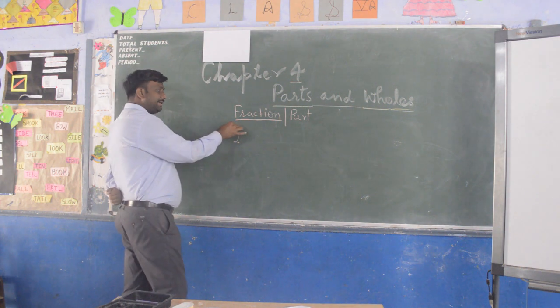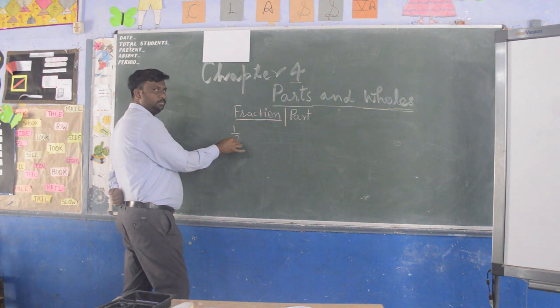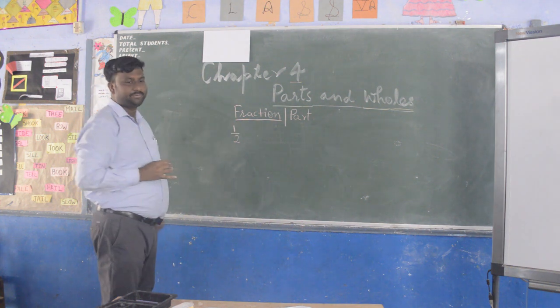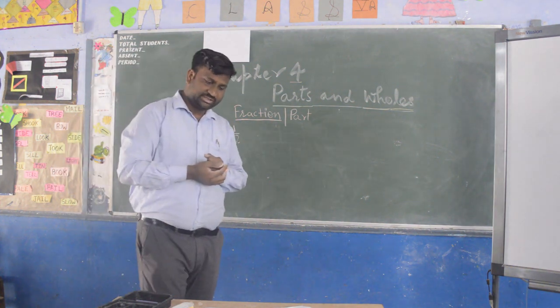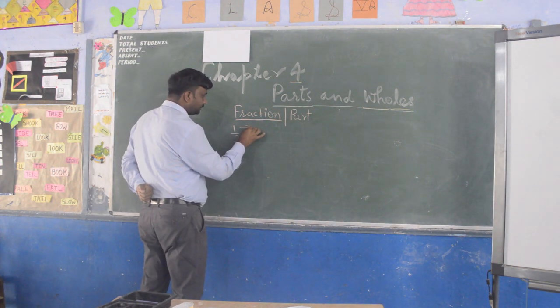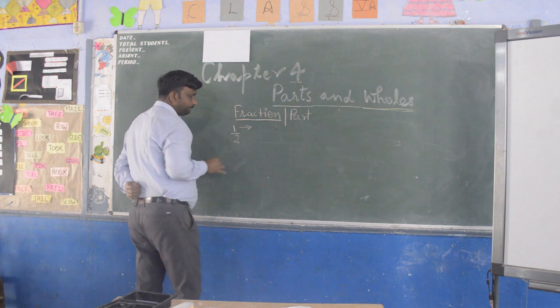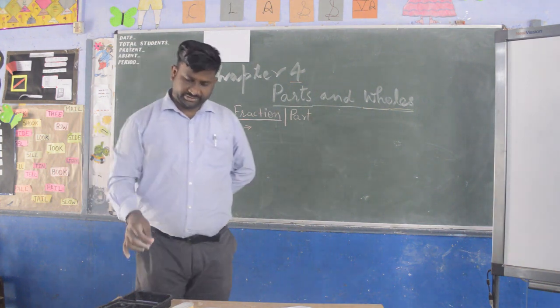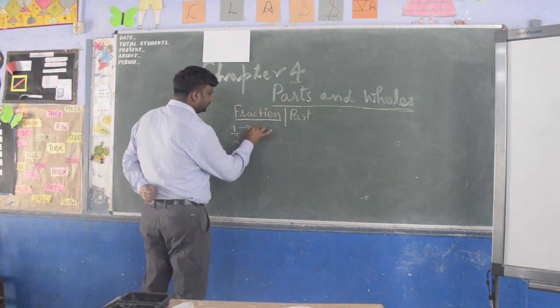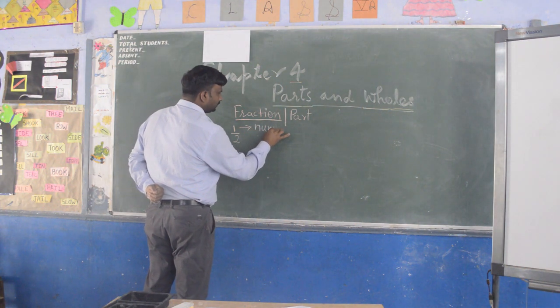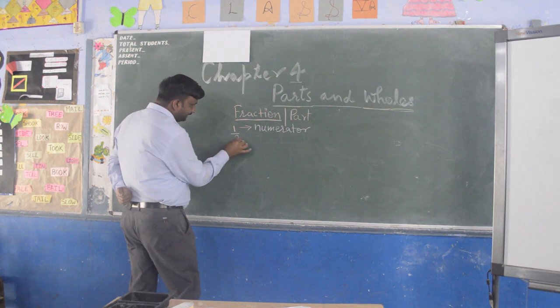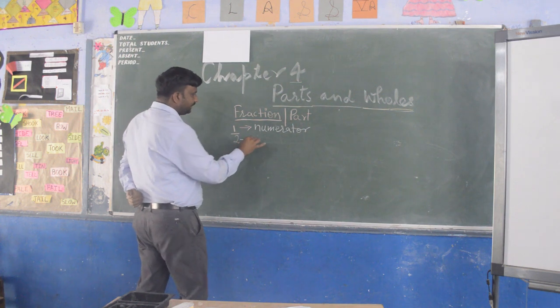Means one part of two. Total parts are two, we have taken one part. So this kind of number is called as a fraction. In the fraction, this upper portion, upper one, is called as numerator. And this lower number is called as denominator.